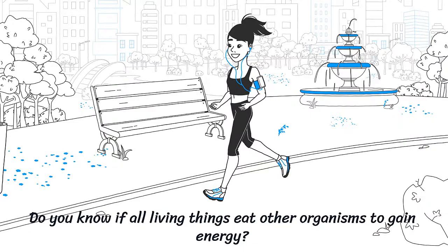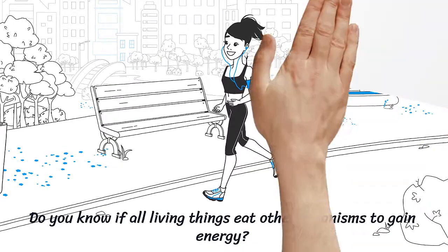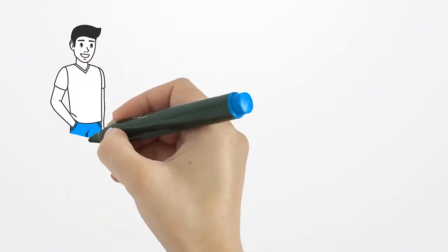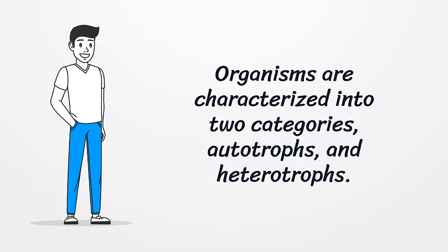Do you know if all living things eat other organisms to gain energy? Organisms are characterized into two categories: autotrophs and heterotrophs.